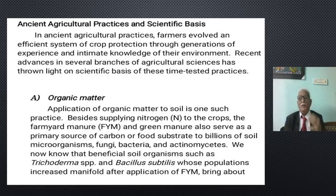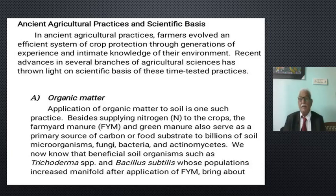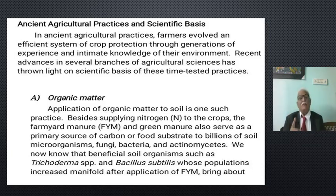Just for half a minute, let us recap what we studied so far. In the first class we tried to understand what is agriculture heritage — it is simply the techniques that are handed over as a tradition. Then we tried to understand the ages: stone age, bronze age, iron age, and what are the periods in agriculture heritage: ancient period, medieval period, and modern period.